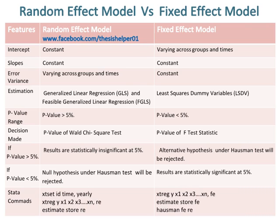Estimation in the Random Effect Model uses Generalized Linear Regression (GLS) and Feasible Generalized Linear Regression (FGLS), whereas estimation in the Fixed Effect Model uses Least Squares Dummy Variables (LSDV).